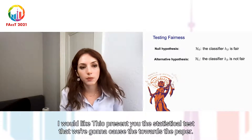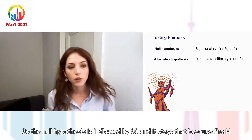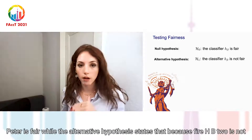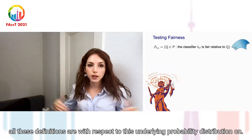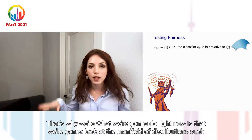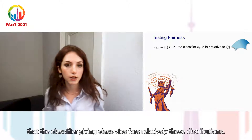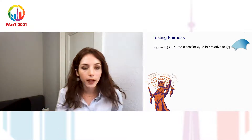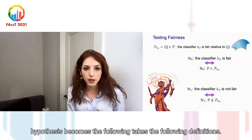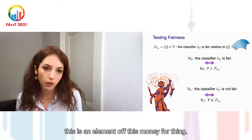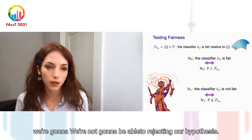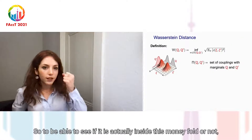I'd like to present the statistical test we consider throughout the paper. The null hypothesis H0 states that classifier H_beta is fair, while the alternative hypothesis states that H_beta is not fair. All these definitions are with respect to the underlying probability distribution P. What we do is look at the manifold of distributions such that a given classifier is fair relative to those distributions, denoted by F(H_beta). If P is an element of this manifold, the classifier H_beta is fair and we fail to reject the null hypothesis.